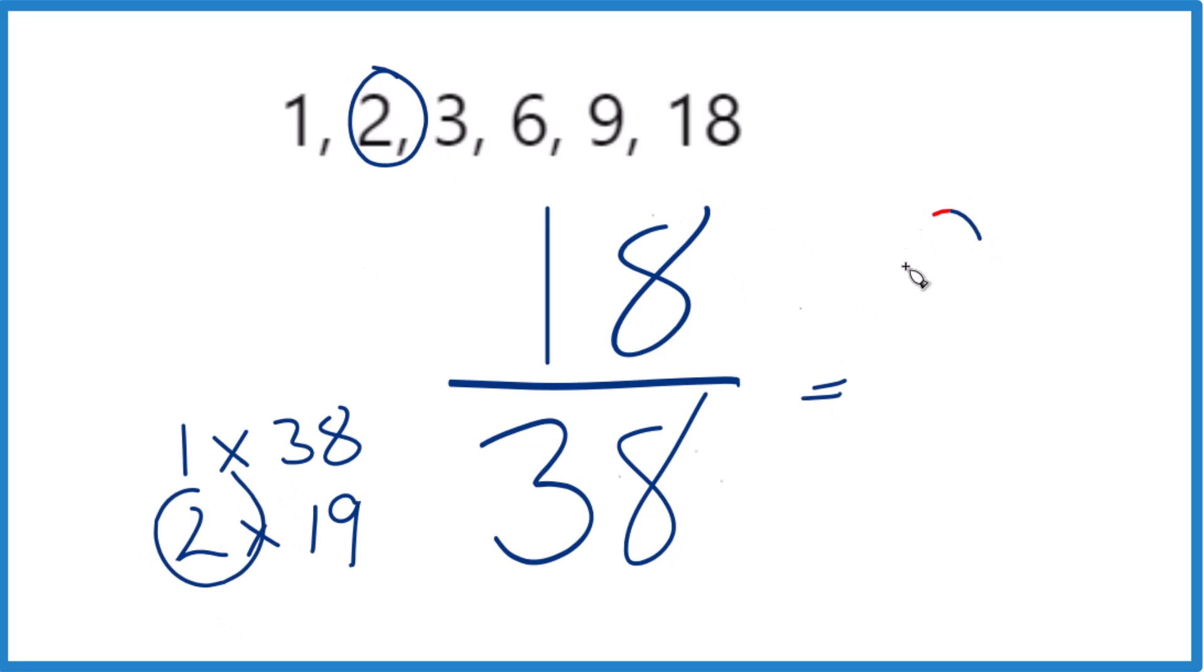So 18 divided by 2, that gives us 9. And 38 divided by 2, that's the 19 there. It's what we found before. So that's how you simplify 18 38ths.